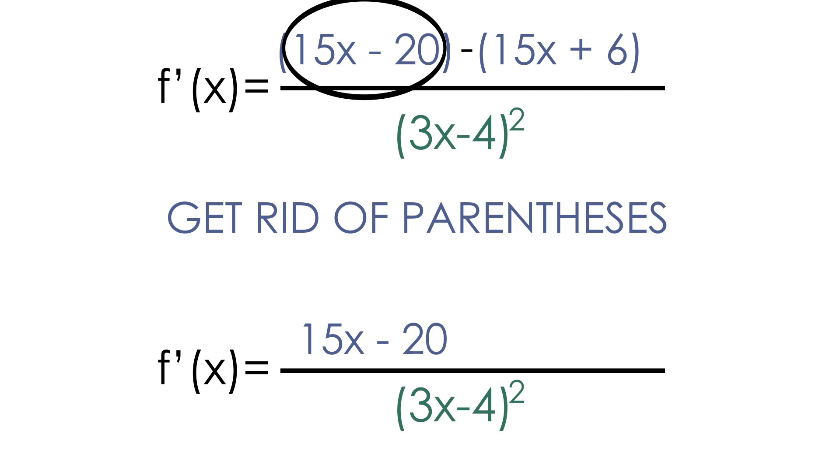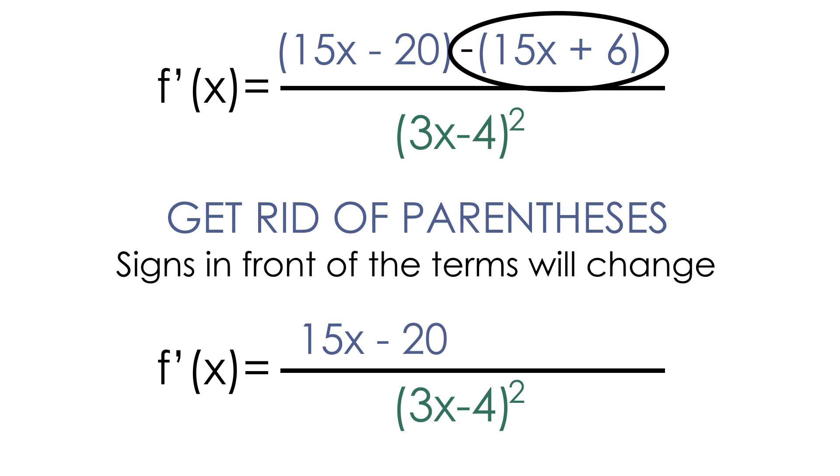But the second set of parentheses does have a negative sign in front of it, which means that the sign in front of each term will change. So the positive 15x will become a negative 15x, and the positive 6 will become a negative 6.